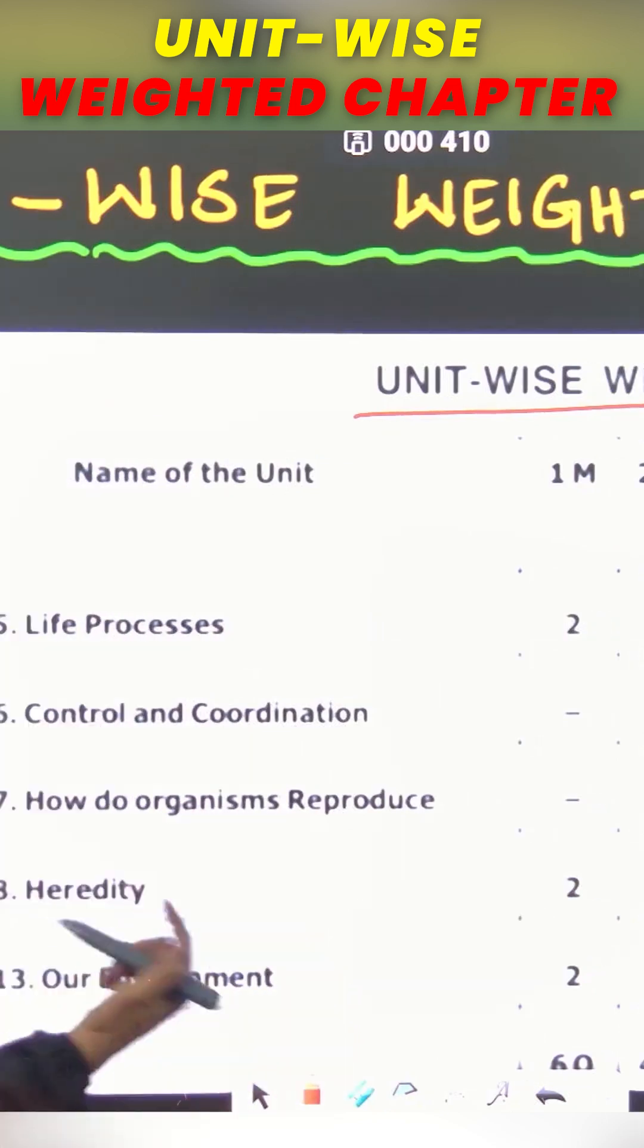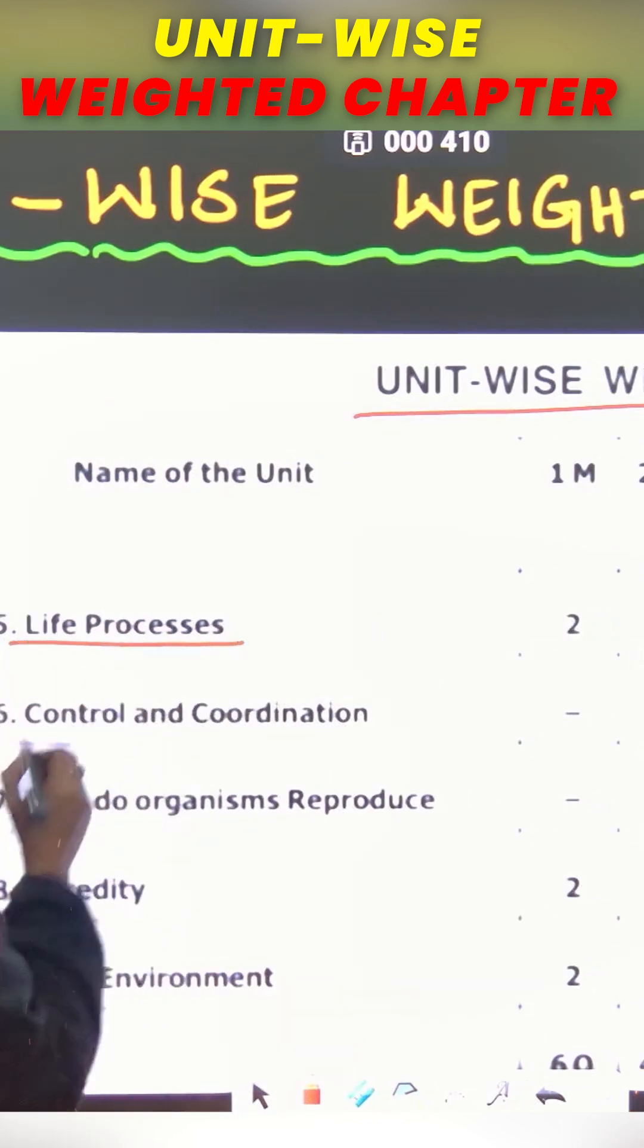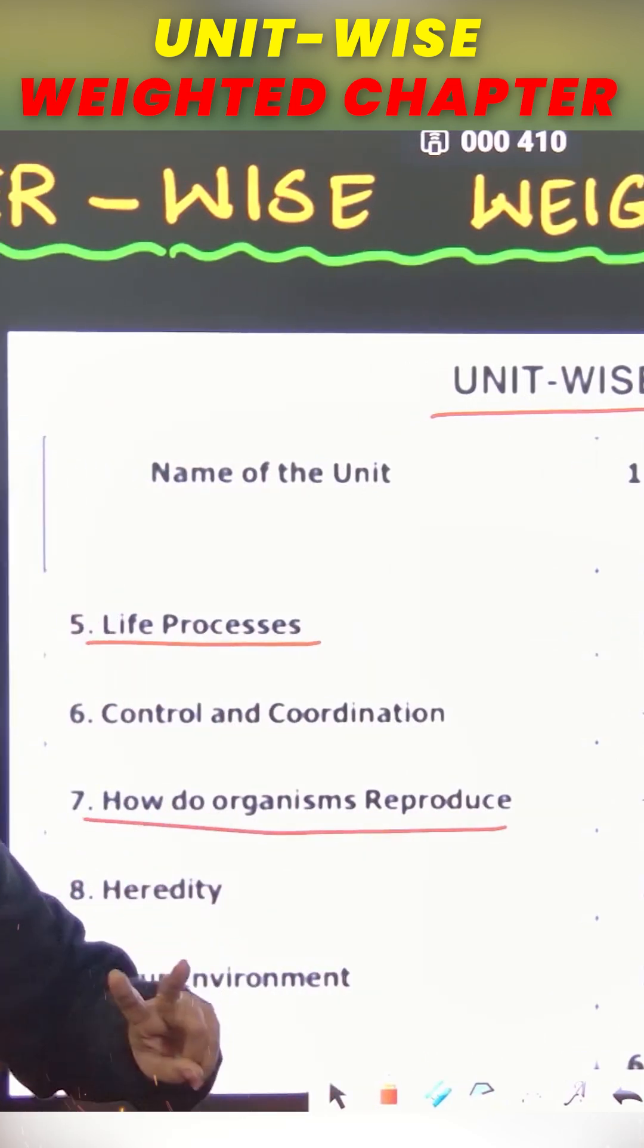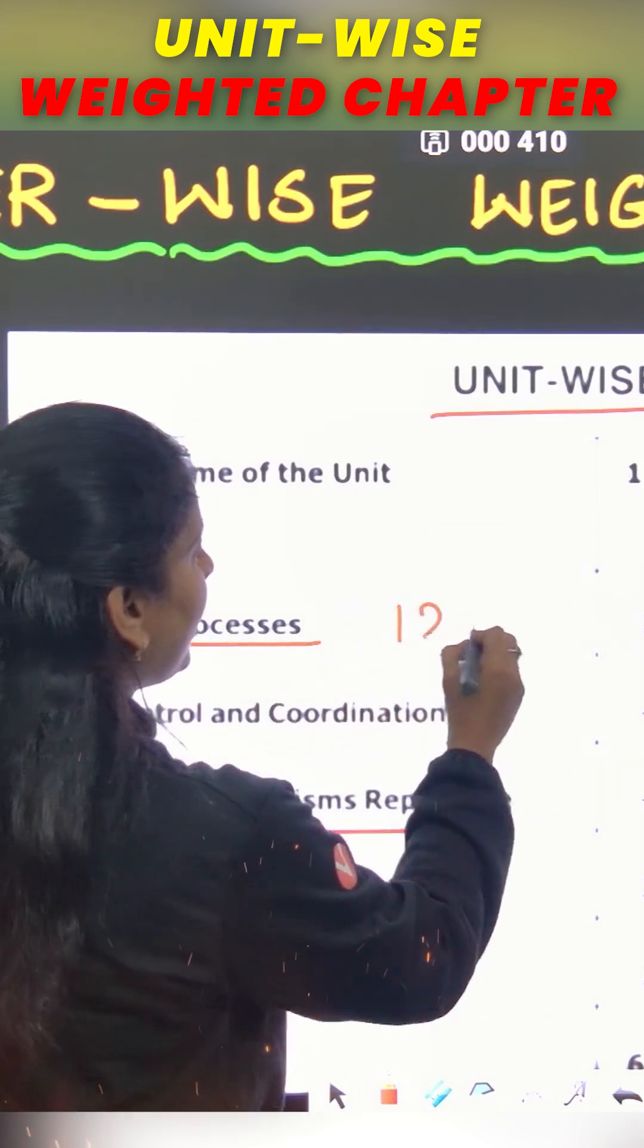Unit-wise weightage, we have a unit-pair like processes and how do organisms reproduce. These chapters, it is carrying 12 marks each.